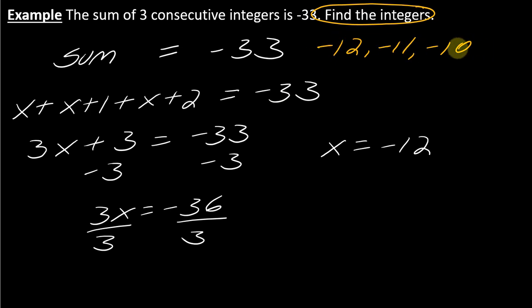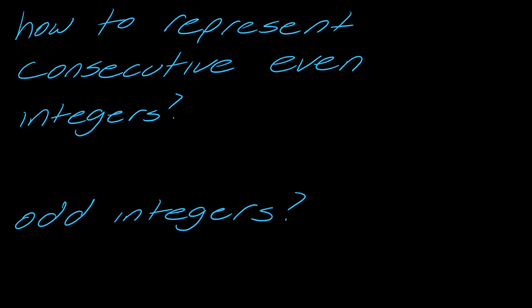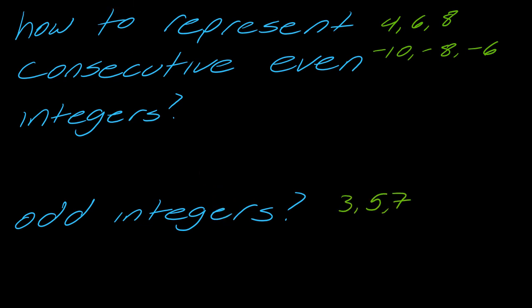I highly recommend a quick check by adding the integers together. Starting at negative 12, add 1 to get negative 11, and add 1 again to get negative 10. So the three integers are negative 12, negative 11, and negative 10. Now I want to pivot to consecutive even and odd integers. Consecutive even integers would be like 4, 6, 8, or negative 10, negative 8, negative 6. Consecutive odd integers would be like 3, 5, 7, or negative 13, negative 11, negative 9.